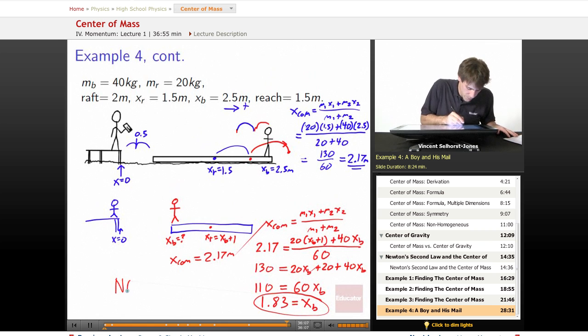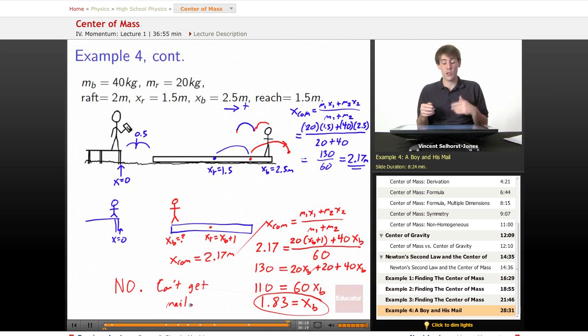So no, can't get mail. He can't get mail without rowing. Great. 1.83 is where he finishes getting up to. And we know this because we know that the center of mass of the system is going to have to be the same before and after because there's no external forces on the system.